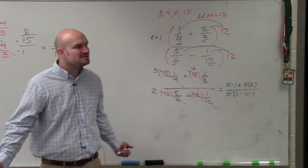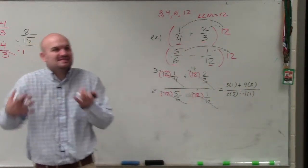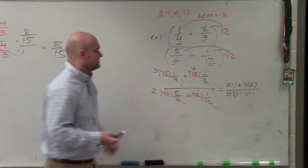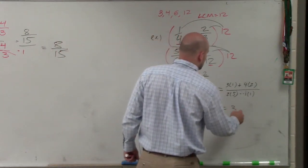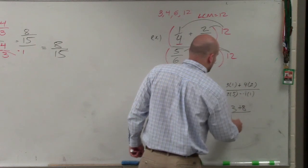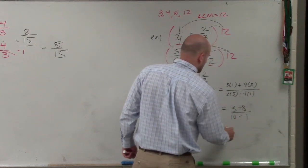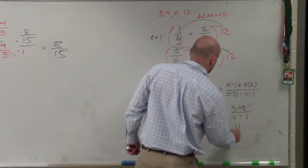And guess what? Now I have no more denominators, because all those denominators evenly divided into my least common multiple. And now I just finally simplify my solution. So I have 3 plus 8 over 10 minus 1, and I get 11 over 9. Final answer.